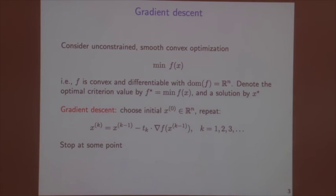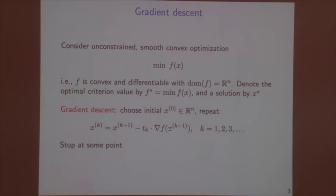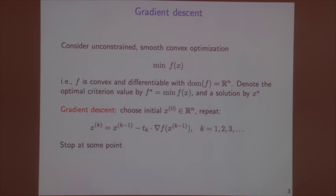Gradient descent can be described by this update rule: starting from an initial point x_0 in R^n, your next location is the previous location minus a step of size t_k in the direction of the negative gradient. The negative gradient gives the direction where the function decreases the most, so you make a small step in that direction and iterate until you're close enough to the true minimum.